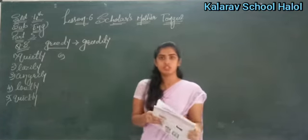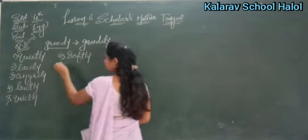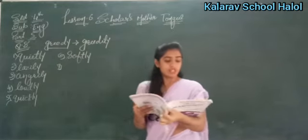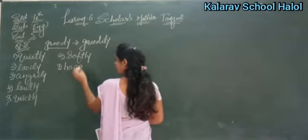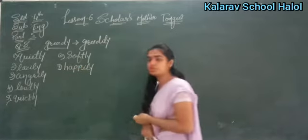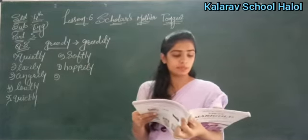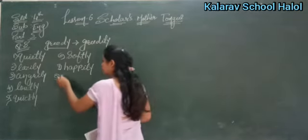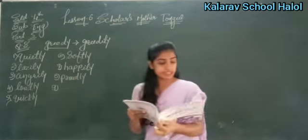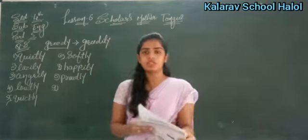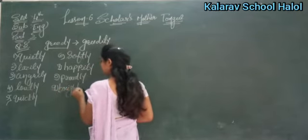अब six number से start कर रहे हैं। 'Grandfather's parrot dash.' Bracket में दिया है soft, so softly. Right? अब next seven number: 'The children danced dash.' Bracket में दिया है happy — H-A-P-P-Y. तो happy की spelling change होगी, I-L-Y बनेगा — happily. Next eight number: 'Tina has the medal dash in her hand.' Bracket पे दिया है proud, so proudly. Next nine: 'The sun is shining dash.' Bracket में दिया है bright, so brightly.